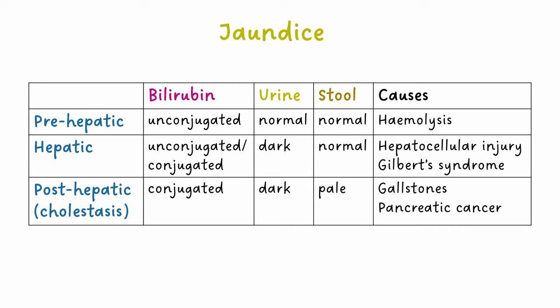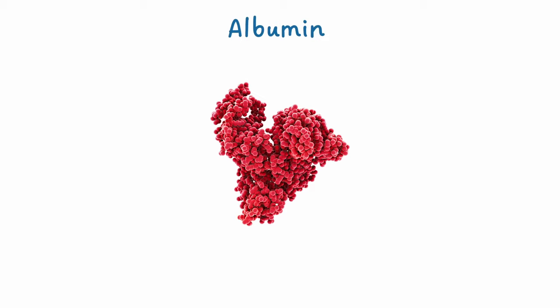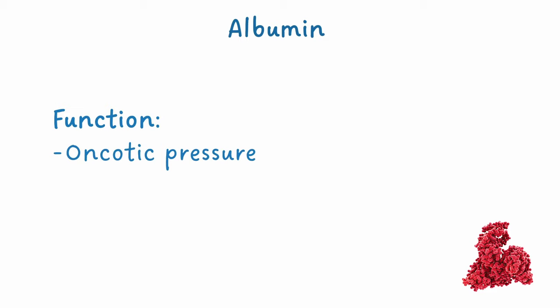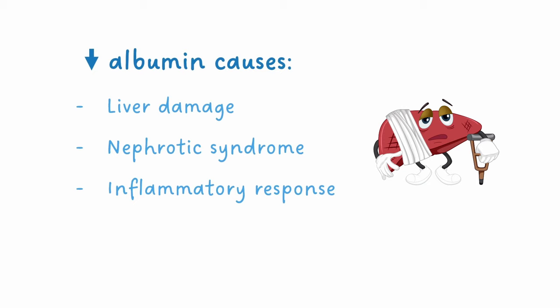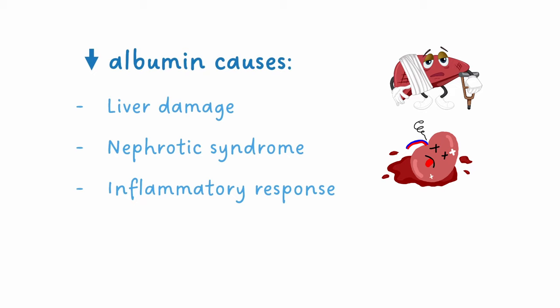Albumin is the most abundant blood protein in the body. Its main functions are to maintain oncotic pressure in the blood, which stops fluid leaking out of blood vessels, and it's also a transporter protein for other molecules in the blood. Albumin can be low in liver damage, as it can't be synthesised as fast. It can also be caused by excessive loss of albumin through the kidneys in nephrotic syndrome, and it's also low during an inflammatory response.